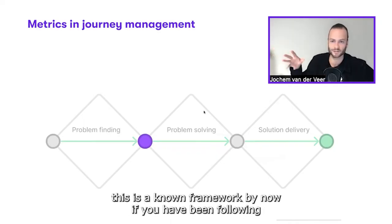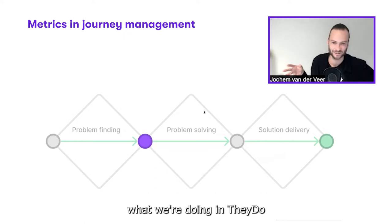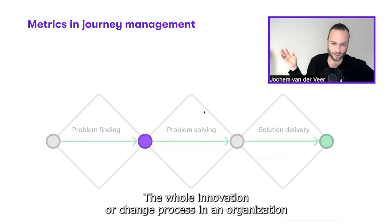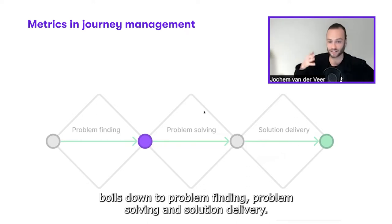Okay, triple diamond - I think this is a known framework by now if you've been following what we're doing at TheyDo. The whole innovation or change process in an organization boils down to problem finding, problem solving, and solution delivery.